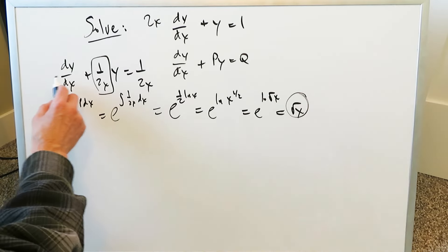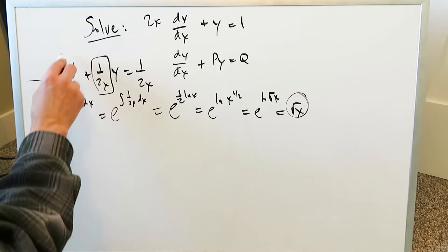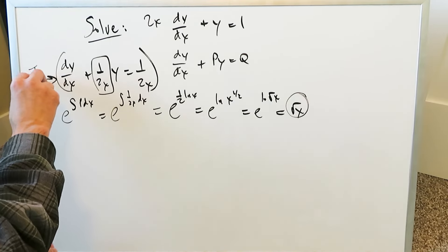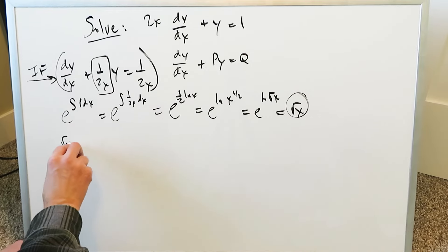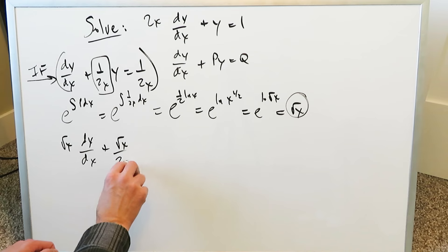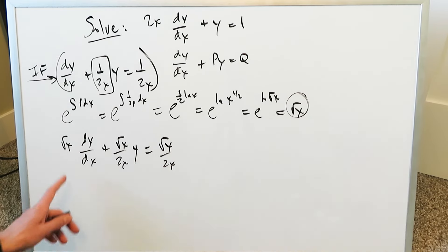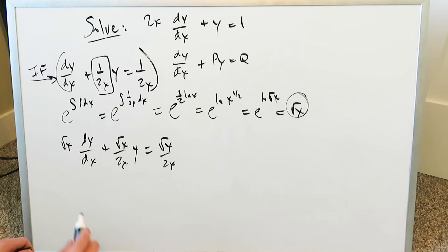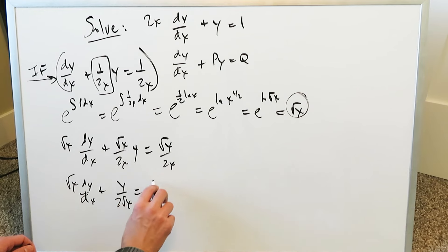This simplifies to just root x using the properties of logarithms. Root x is your integration factor, which you multiply across the expression. When you multiply root x across, you get root x times dy/dx plus root x over 2x times y is equal to root x over 2x, which simplifies to root x times dy/dx plus y over 2 root x equals 1 over 2 root x.